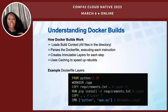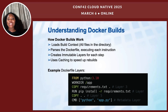There's one very important thing: the order of instructions really matters. Placing the copy of requirements.txt and running pip install first helps Docker cache the dependencies separately from the application code. This avoids unnecessary reinstalling of dependencies when only the code changes.